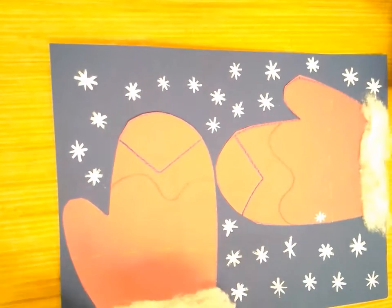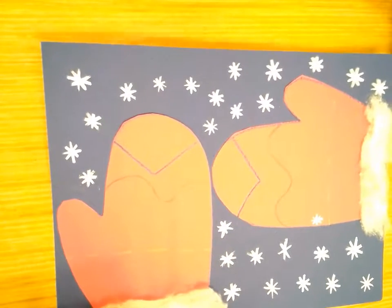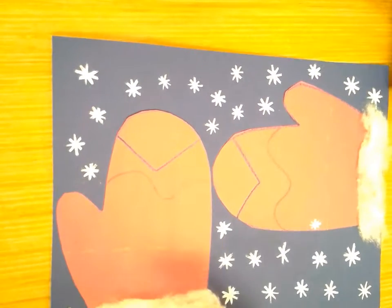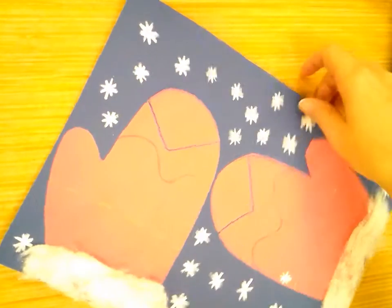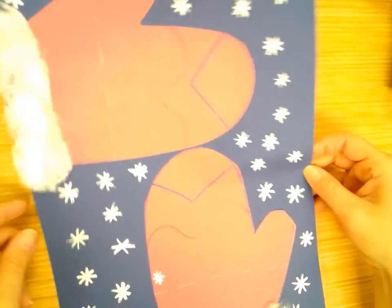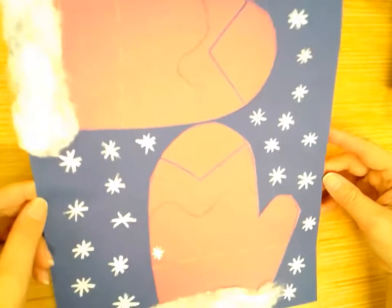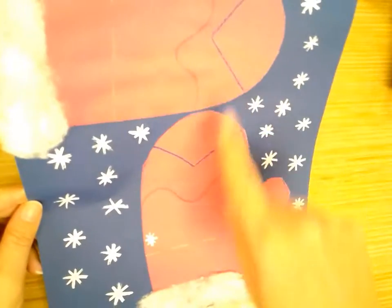This one has a little bit extra over here so I'm going to carefully take some of that off. And now I have my two winter mittens with all of the snowflakes around them and they make the map of Michigan.